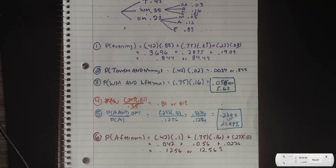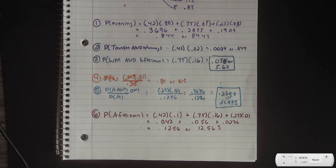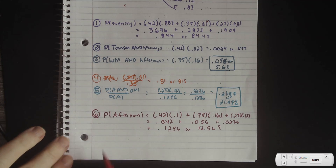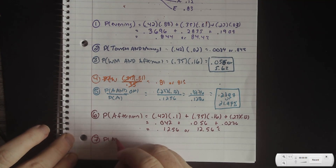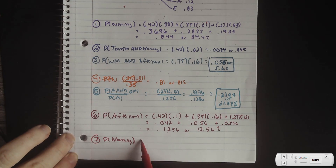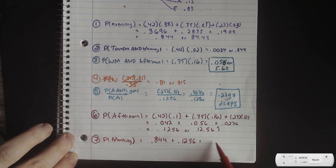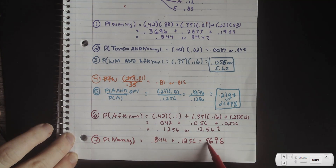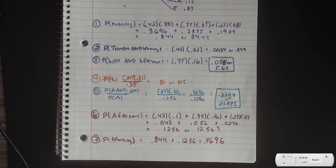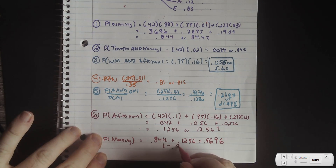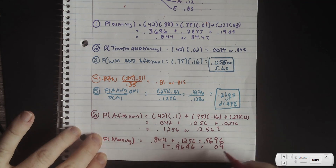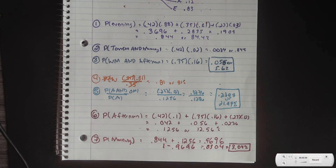What's the probability of seeing it in the morning? Since I already have evening at 0.844 and afternoon at 0.1256, I can add them: 0.844 + 0.1256 = 0.9696. Then 1 minus 0.9696 gives the morning probability. It comes out to about 3%, though in reality it would probably be much lower — nearly negligible.